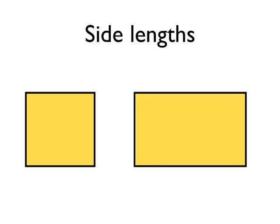Let's have a look at how we can tell different shapes apart just by looking at the side lengths. Here I've got a rectangle and a square. On the square, all four sides have the same length. Whereas on a rectangle, the opposite sides have the same length — there are two pairs of sides which have the same length. The top and bottom sides are the same length, and the left and right sides are the same length. The difference between a rectangle and a square can be described using the side lengths.